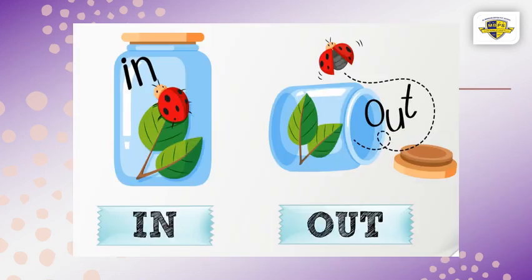Look, KG1. Look at the ladybird. She is inside the jar. She cannot get out because the jar is closed. And look at the other side — the ladybird is outside. She is free to fly.